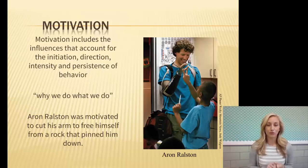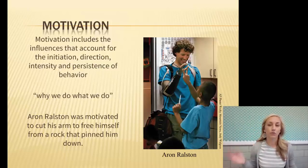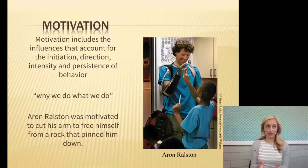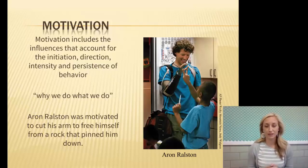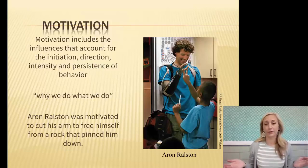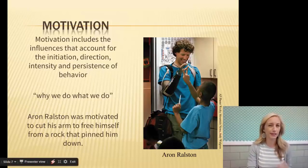Aaron Ralston was motivated to cut off his own arm to free himself from a rock that pinned him down — James Franco played him in the movie. He would go hiking in many parts of the world all by himself. He fell into a crack between two cliffs, a boulder caught his arm, and he was going to die there. But he was able to break the bone, cut off his own arm, climb out, and find help. There was something in him driving toward survival, and just saying 'survival instinct' is not good enough.